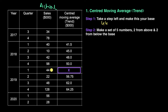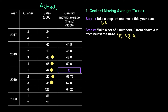Step two: make a set of five numbers — two from above and two from below the base. Going back to the base of 44, two from above are 98 and 42, and two from below are 22 and 48. In sequence that gives us: 42, 98, 44, 22, 48 — a set of five numbers including the base.